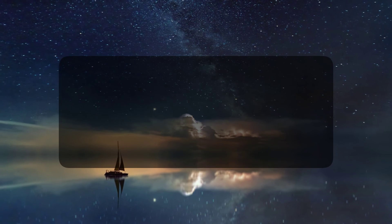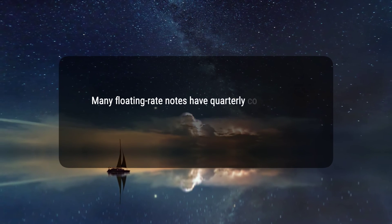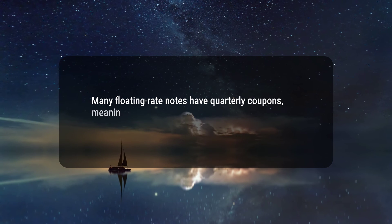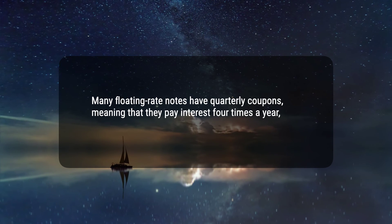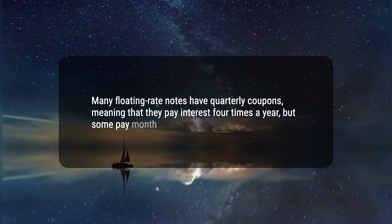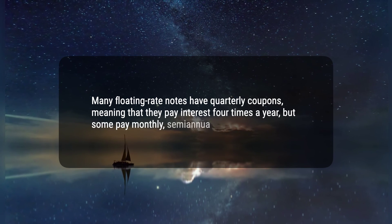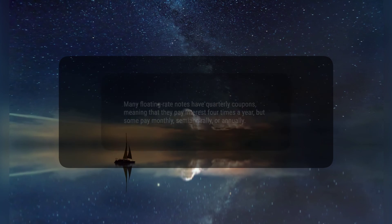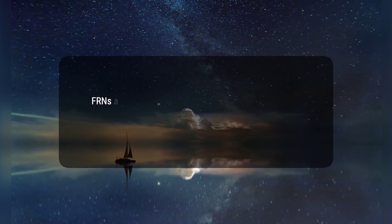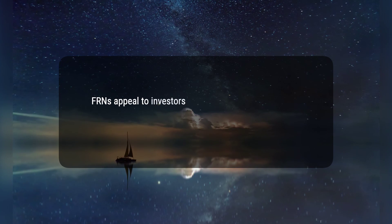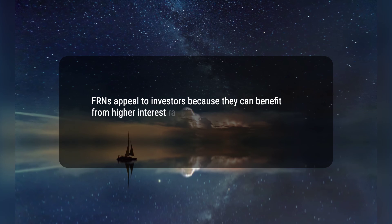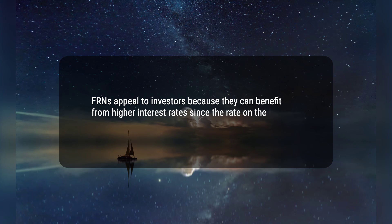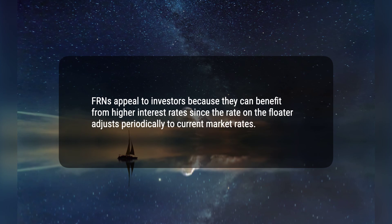3. Many floating rate notes have quarterly coupons, meaning that they pay interest four times a year, but some pay monthly, semi-annually, or annually. 4. FRNs appeal to investors because they can benefit from higher interest rates since the rate on the floater adjusts periodically to current market rates.